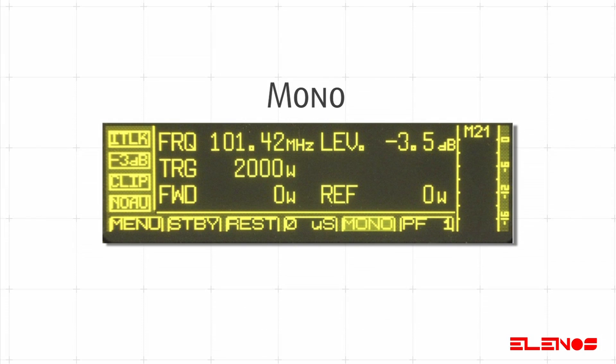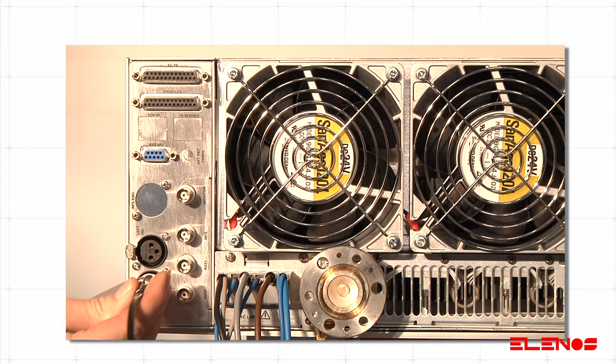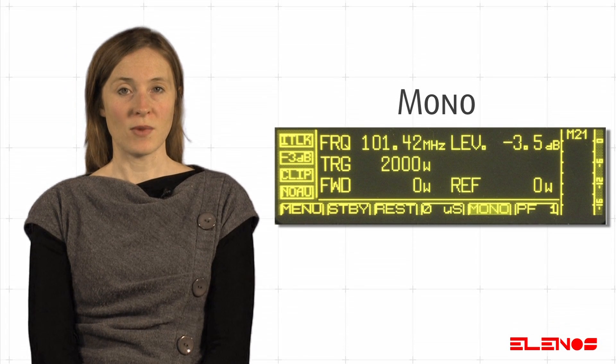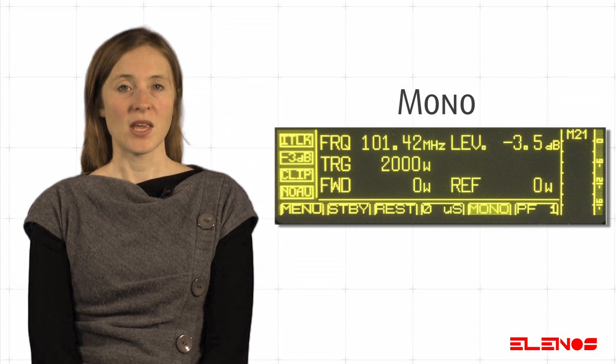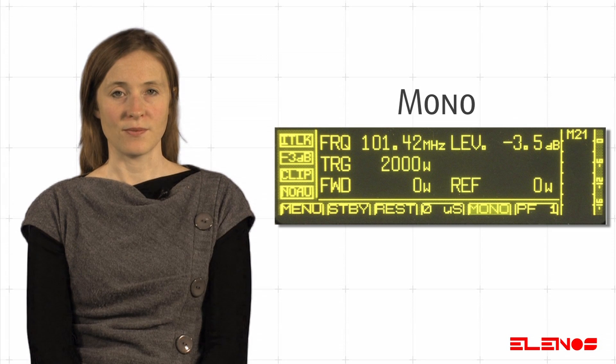Mono: apply the mono signal to the XLR right connector on the rear panel. The signal can be balanced or unbalanced. In the latter case, there is a 3 decibel level reduction.